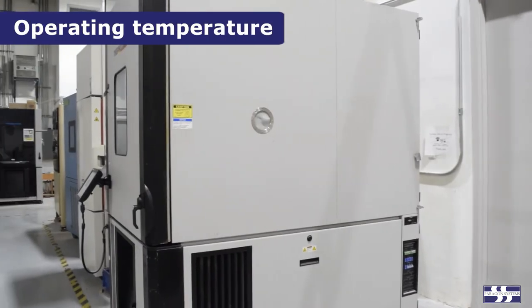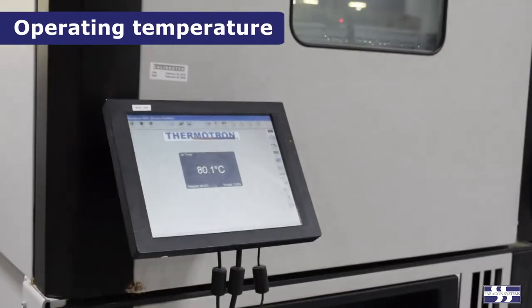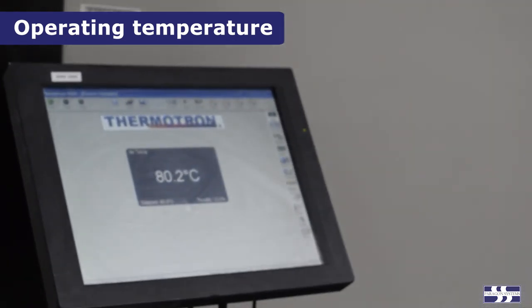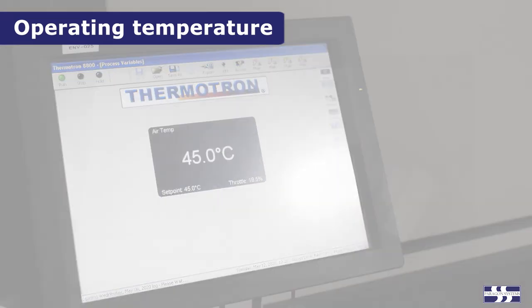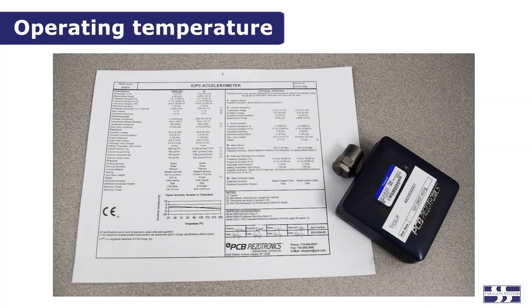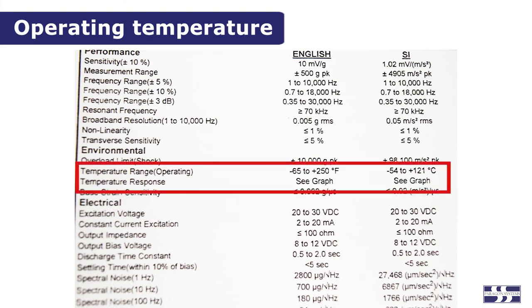The temperature which an accelerometer is exposed to will affect its sensitivity, and can significantly change the acceleration values that you are measuring. Again, the manufacturer's specification for the accelerometer should be consulted to ensure that the accelerometer will measure accurately at the temperature under which you are testing.